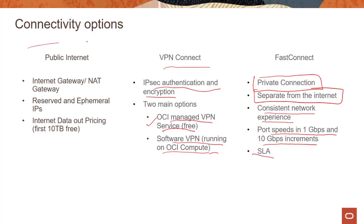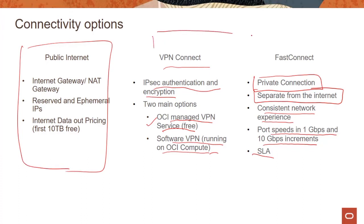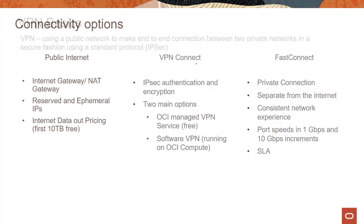The first option — public internet — we looked into in the previous module on virtual cloud network. In this particular module, we are going to look in more detail around VPN and FastConnect.